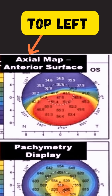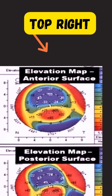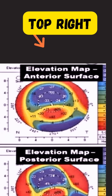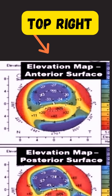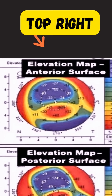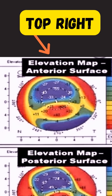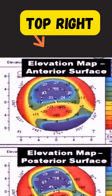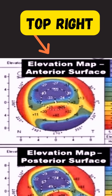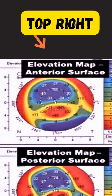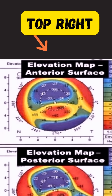Next, we have the anterior elevation map on the top right. This compares the front corneal surface to a best fit sphere and calculates the elevation. Any bulging of the cornea will appear on these elevation maps.